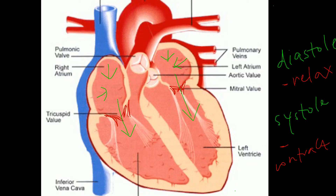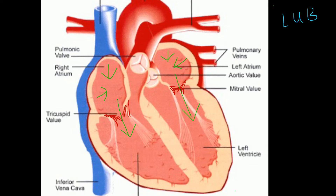When ventricular systole occurs — meaning the ventricles contract — the blood is pushed out with great force. This opens up the pulmonic and aortic valves, the semilunar valves, and it snaps shut the atrioventricular valves. The blood gathers behind the atrioventricular valves and, during ventricular systole, snaps them shut. That produces the first heart sound that you hear: "lup." The heartbeat sound goes lup-dub, lup-dub, and that first sound, lup, is known as the first heart sound.